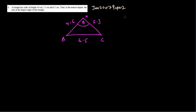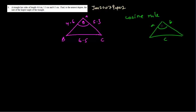Since this is a non-right angle triangle, we have to use the cosine rule. For finding the angle using the cosine rule, we need all three sides. The cosine rule states that cos θ equals a squared plus b squared — the sum of the sides that make up the angle — minus the square of the opposite side, divided by double of a and b.